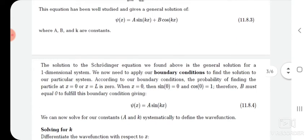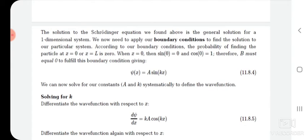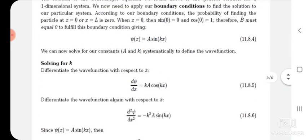Now we apply boundary conditions. When x equals zero, sin(0) equals zero and cos(0) equals one. Therefore B must equal zero to fulfil the boundary condition. Therefore our wave function reduces to ψ equals A sin(kx) only.